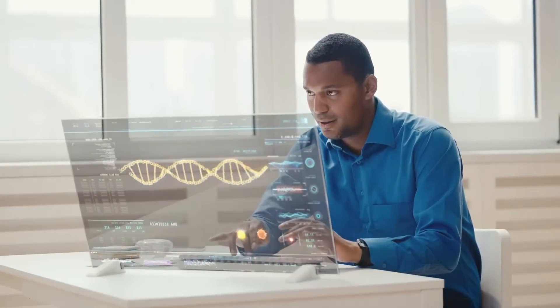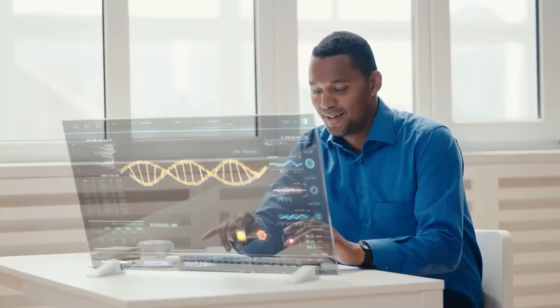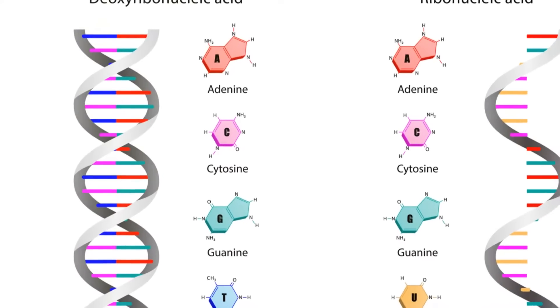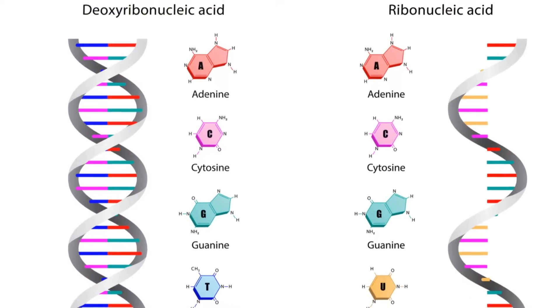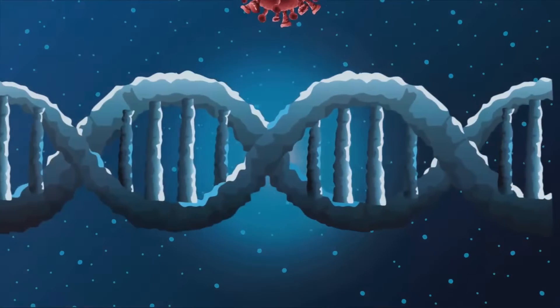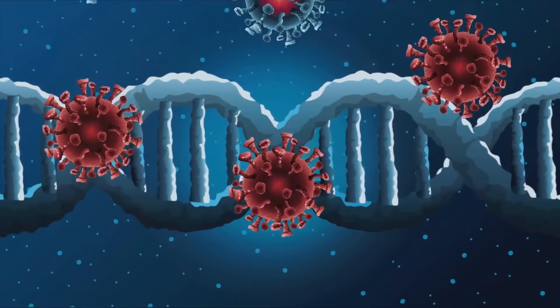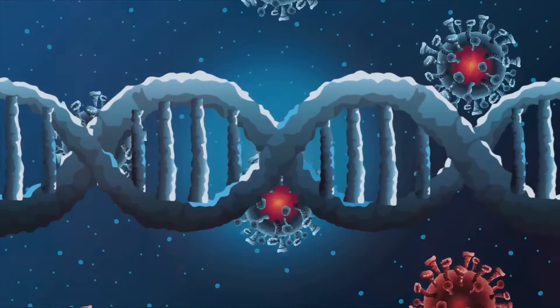Each base pairs up with only one other base, like puzzle pieces fitting together. Adenine always pairs with thymine, and guanine always pairs with cytosine. These base pairs are held together by weak chemical bonds, which can be easily broken and reformed.